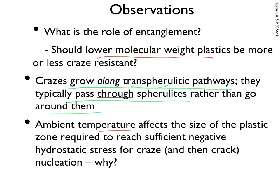Another observation: ambient temperature affects the size of the plastic zone required to reach sufficient negative hydrostatic stress for the craze and then the crack to advance. Why is temperature important? Higher temperature means the chains are vibrating faster so they can become less tangled — it's easier for them to untangle at higher temperature. But this has to do with the initial stages of crazing, which has to do with developing a hydrostatic stress.